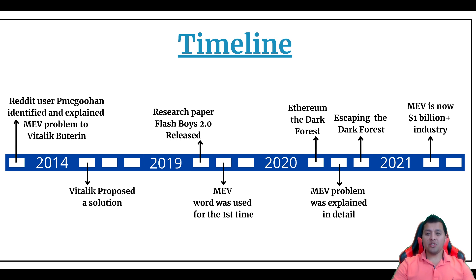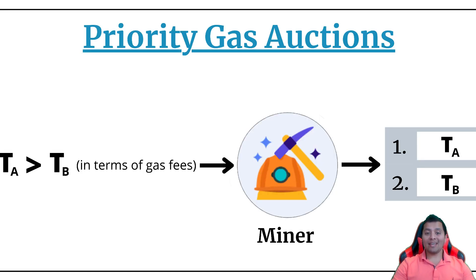Miners on Ethereum 1.0 profited from MEV in really two ways. Number one: selling scarce block space to non-miner MEV extractors through priority gas auctions in exchange for exorbitant transaction fees. As pure arbitrage opportunities offer unconditional revenue, bots often competed against each other by bidding up the transaction fees or gas in PGAs — priority gas auctions — which further drives up fees for other users.